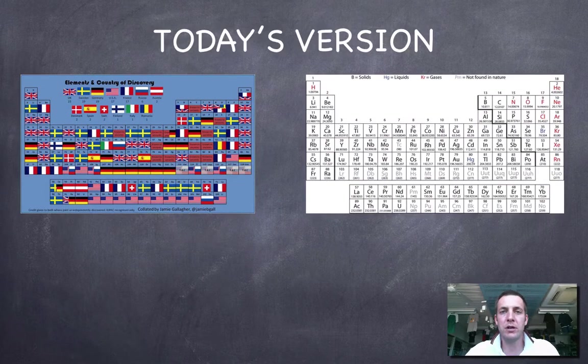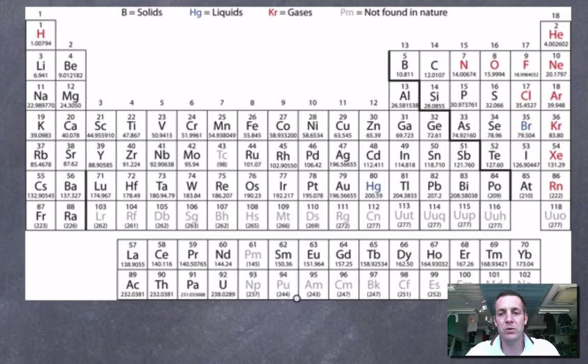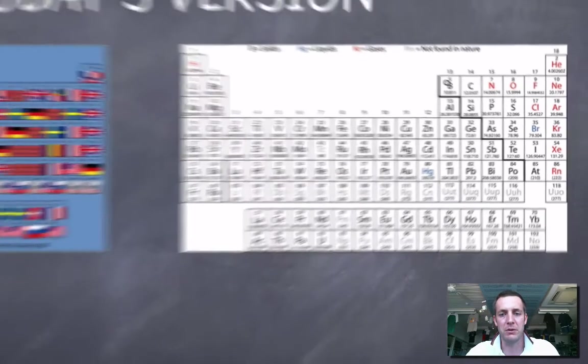Now if we look at today's version, I've found this one while looking for some images of the periodic table. This is quite an interesting one talking about the nationalities of the discoverers of all the elements. You can see that Britain features quite prominently, as does Russia and Germany and Sweden. But normally we don't see all these flags on the periodic table. Normally it's this kind of arrangement which we're hopefully fairly familiar with.